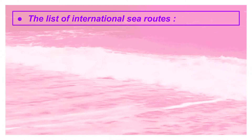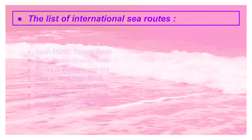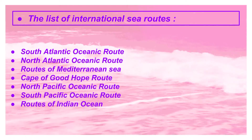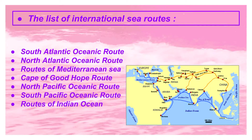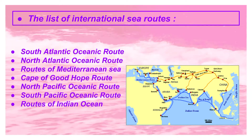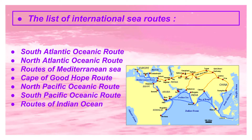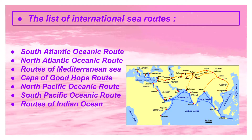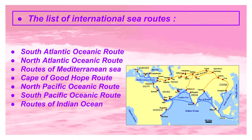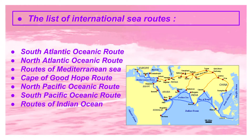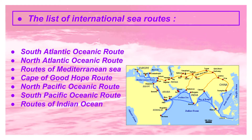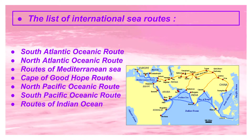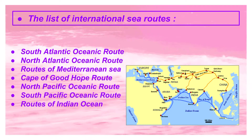Now the route. The list of international sea routes includes the South Atlantic Oceanic Route, North Atlantic Oceanic Route, routes of the Mediterranean Sea, Cape of Good Hope Route, North Pacific Oceanic Route, South Pacific Oceanic Route, and routes of the Indian Ocean. I have shown you a map on your screen — you can see the blue line and yellow or orange line, which are the sea routes.